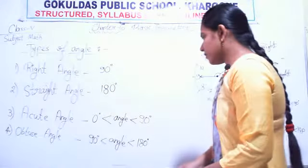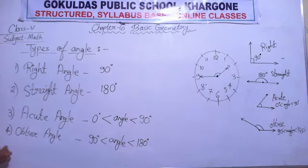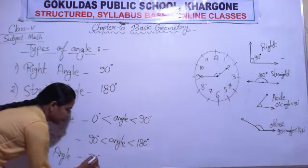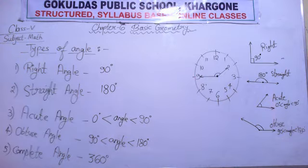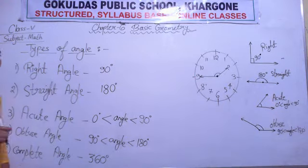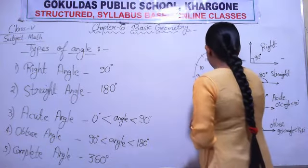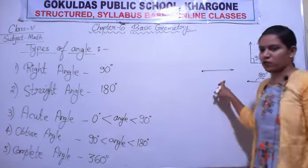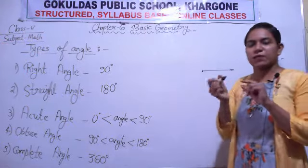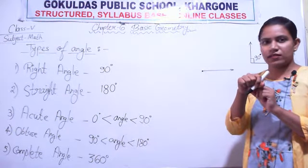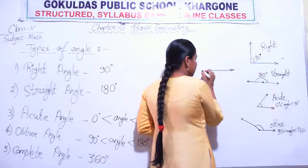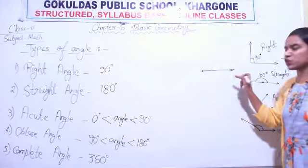One more type is the complete angle. If the measure of any angle is 360 degrees, we call it a complete angle. Suppose we have one arm and both arms start at the same place — right now it is showing zero degrees because both arms overlap each other.